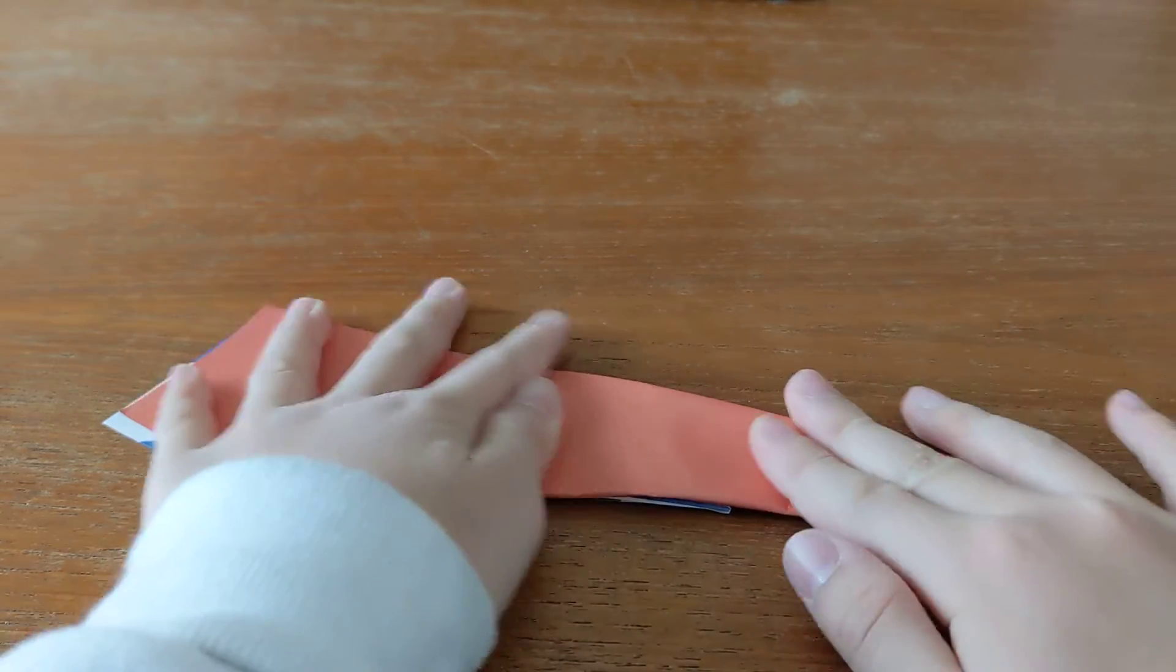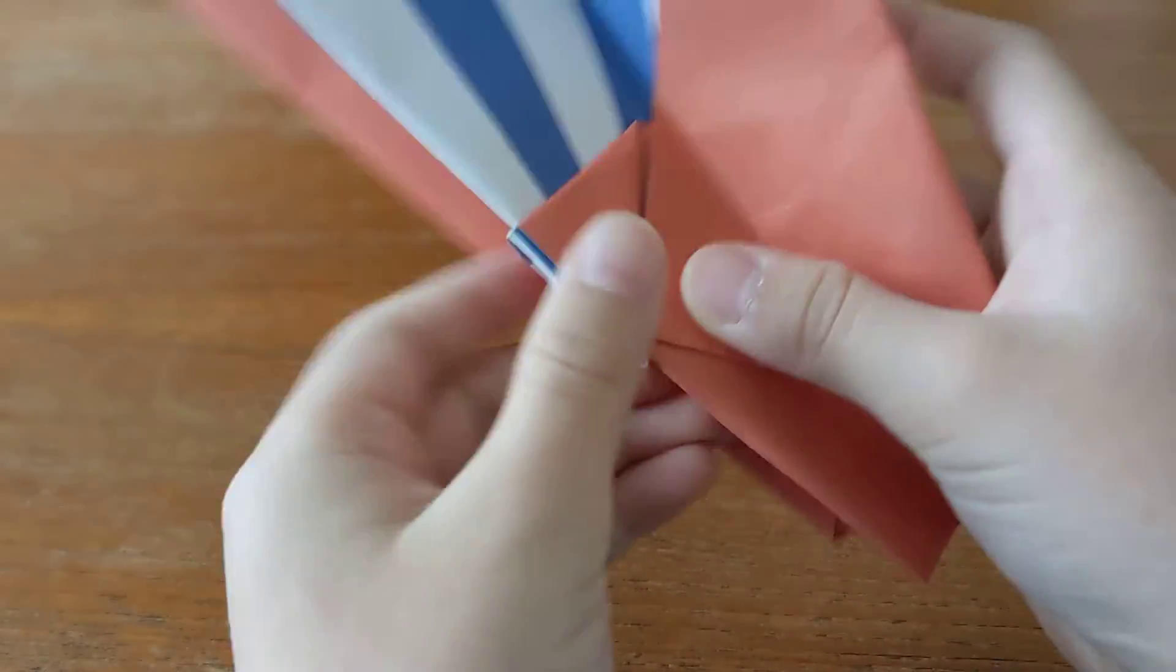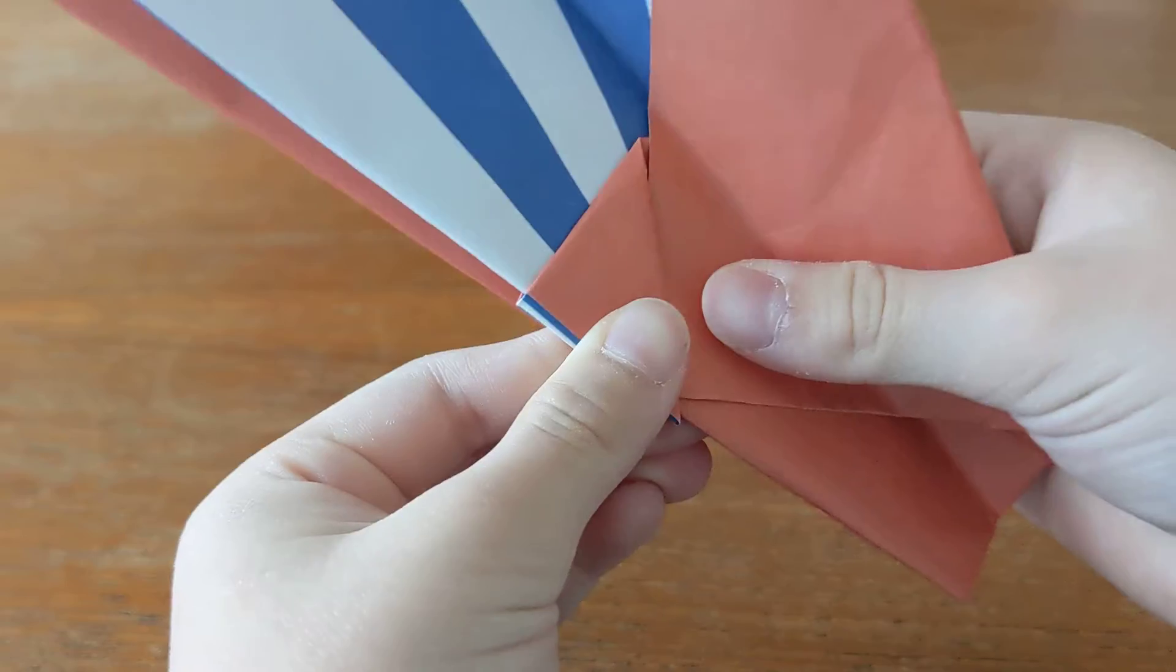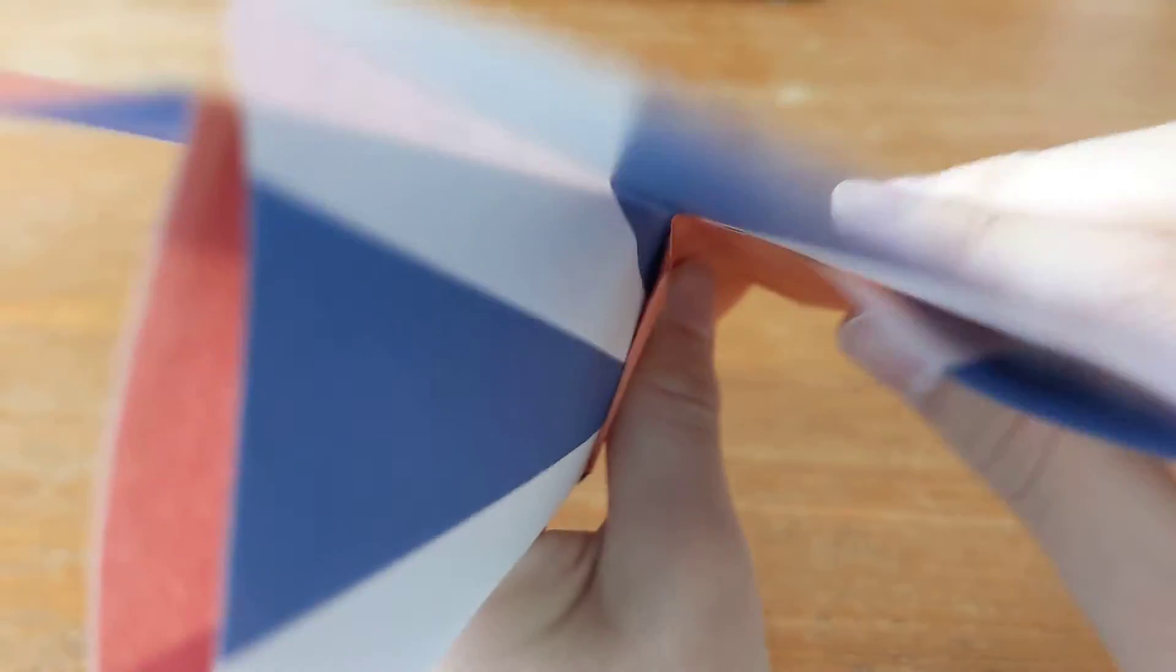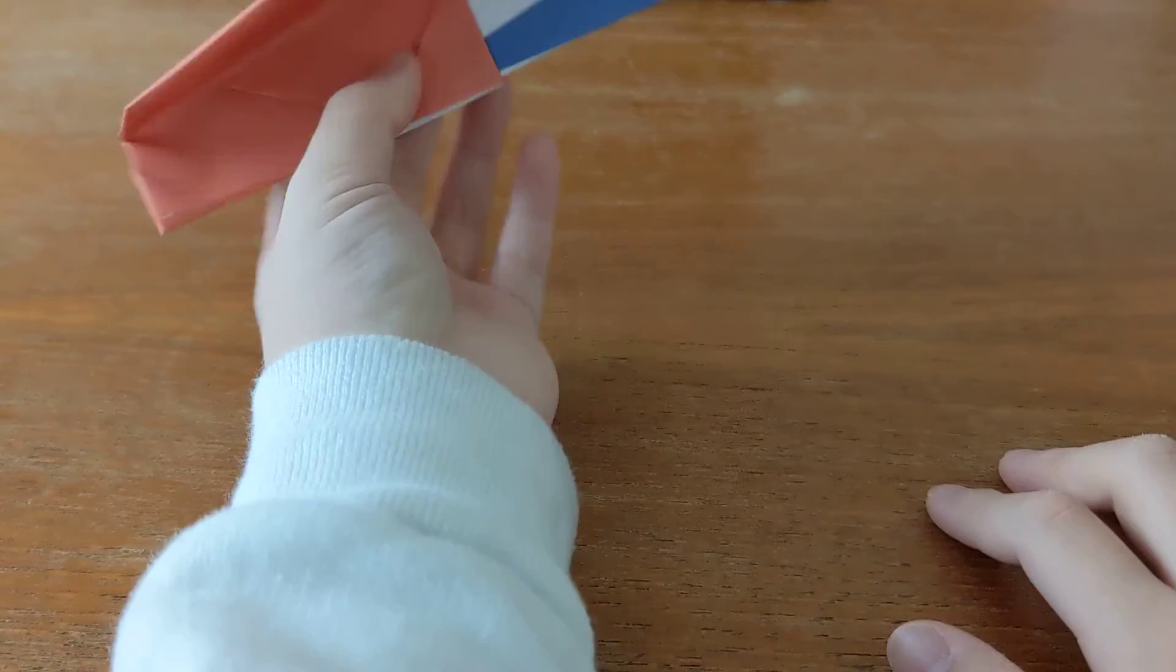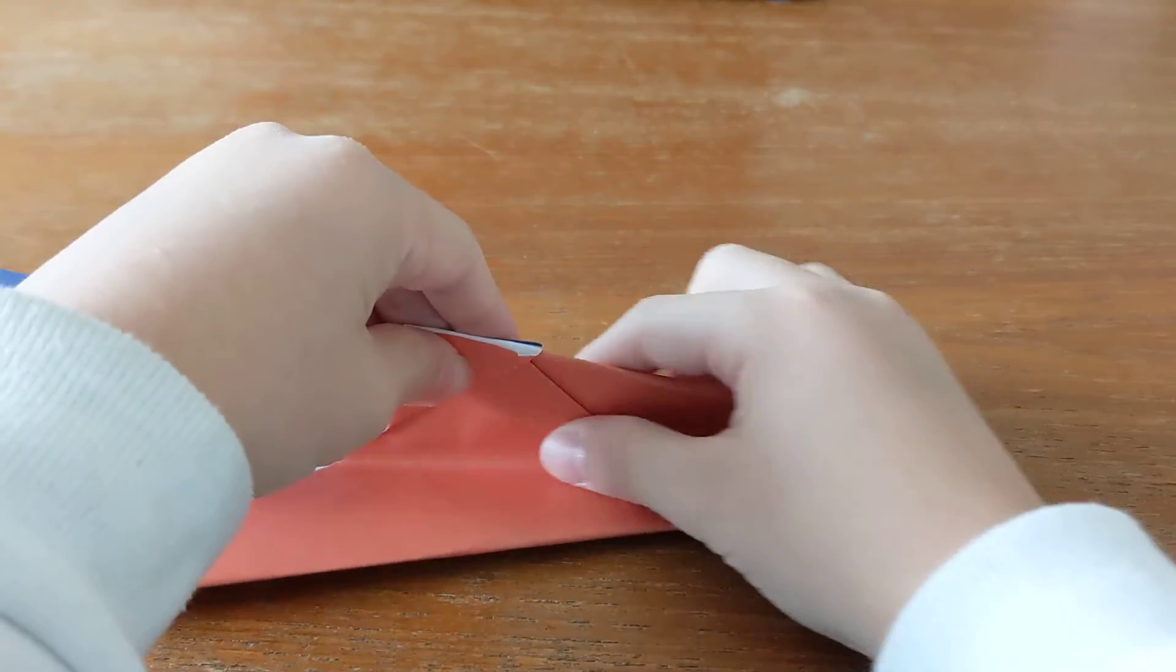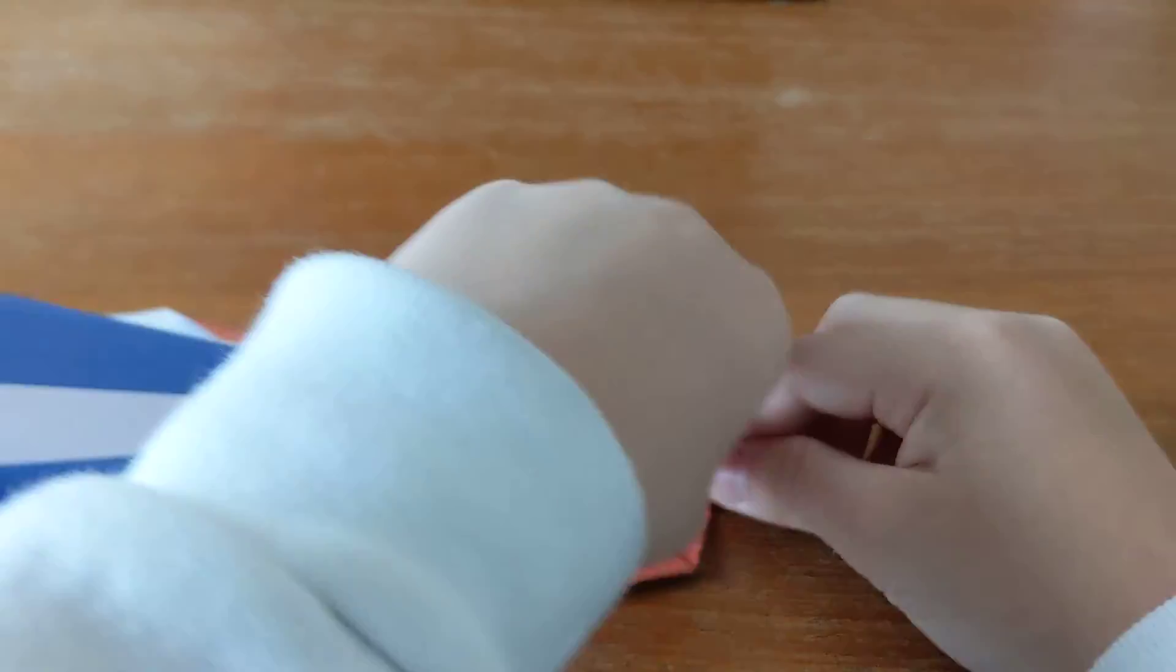As you can see, we have finished our plane. Finally, unfold it. This is what the back of the plane should look like. This is what the front should look like. It shouldn't be too sharp, just like this.